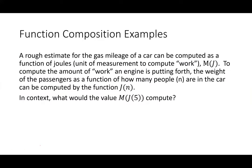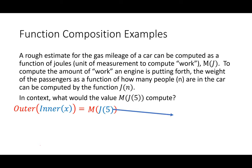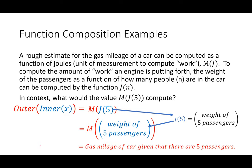Let's do a theoretical example here. Go ahead and pause the video and solve this problem. What you were asked to do was to contextually understand what M of J of five was. The outer of the inner function here is what we're looking at. J of five means the weight of five passengers. If I put five passengers into the car, how many joules is required? Then I consider my M. M of the weight of five passengers. The input is now the weight of five passengers. The output is going to be the gas mileage of the car required.